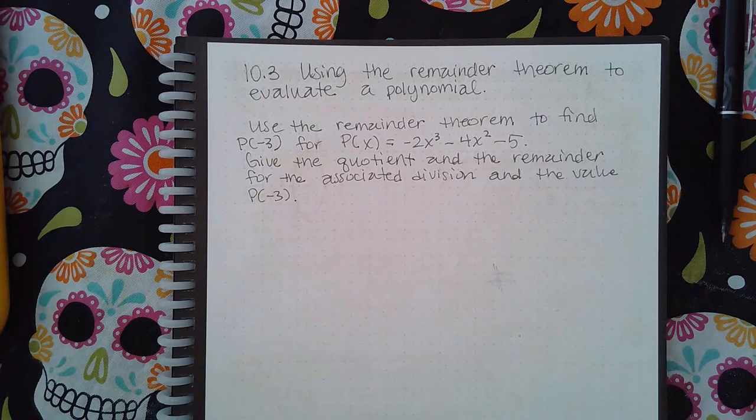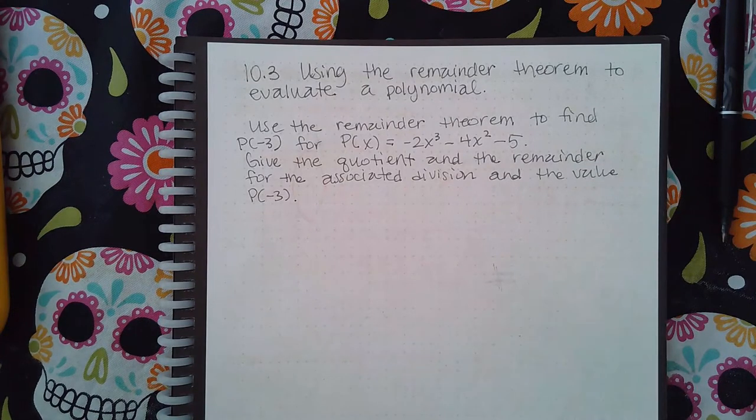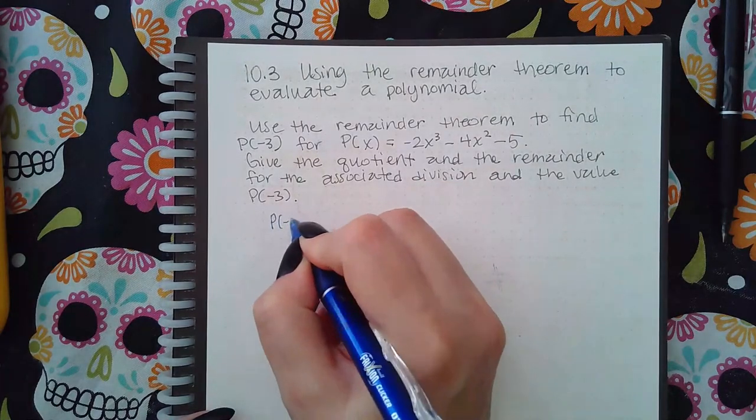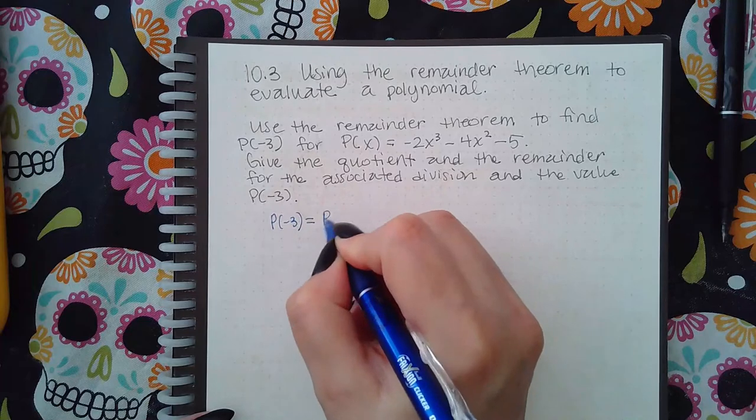Here we have problem 10.3: using the remainder theorem to evaluate a polynomial. The remainder theorem tells us that p(-3) equals the remainder.